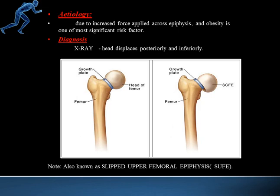The etiology is due to increased force applied across the epiphysis. In coxa vara, the bending moment of the bone increases, putting a lot of pressure on the femoral head — the more angled orientation in coxa vara can provide the necessary force to cause SCFE. Obesity is also a risk factor. Diagnosis is made by x-ray, where the growth plate, head of the femur, and femur are visible. This condition is also known as slipped upper femoral epiphysis (SUFE), since the head is located in the upper part and its displacement is relative to the upper region of the femur.